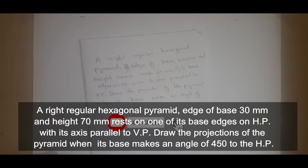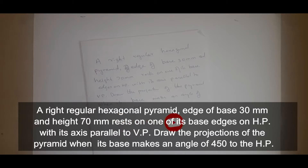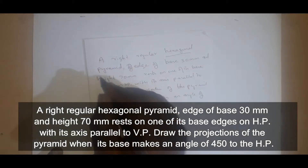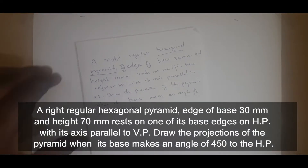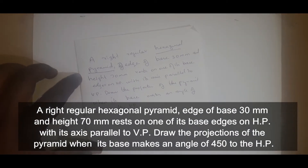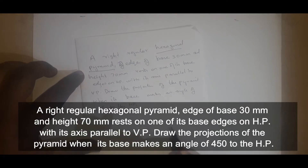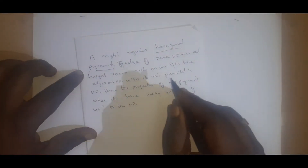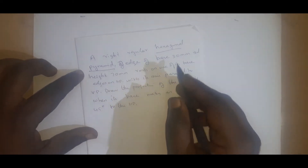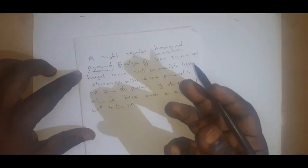Hello friends. The next problem is the projection of solids — a hexagonal pyramid. So we are going to see the projection of a hexagonal pyramid. First of all, let's go for the question. The shape given is hexagonal, which means we have six sides, and since this is a pyramid, it has six triangular surfaces.